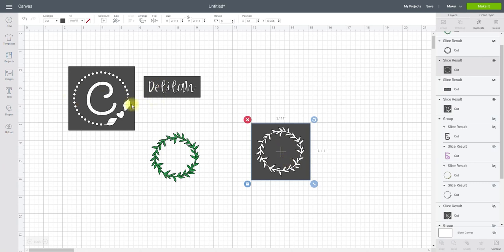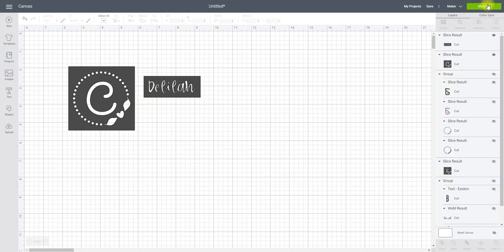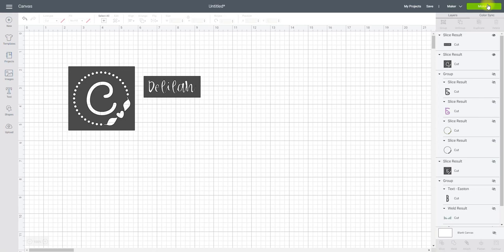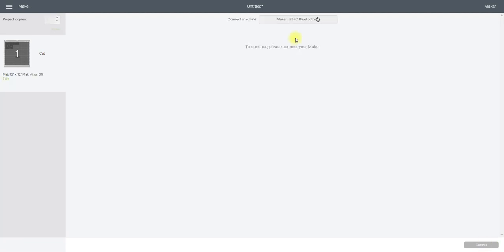These are the two stencils I'm using today. We can then go to make it. I just want to move that along slightly and then go to continue. You can make a stencil on any of the machines so whether that be Joy, your Air or your Maker.